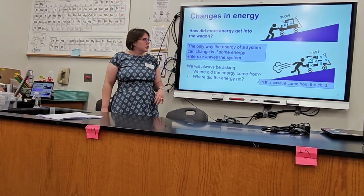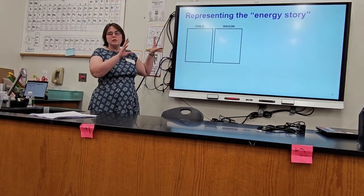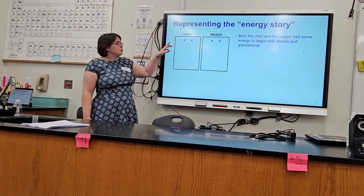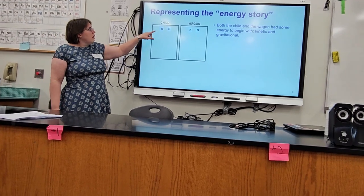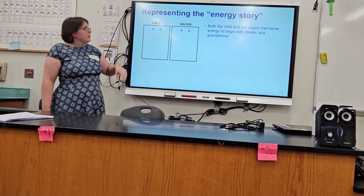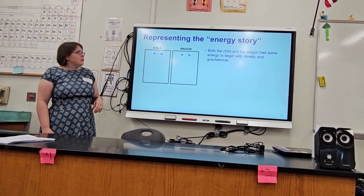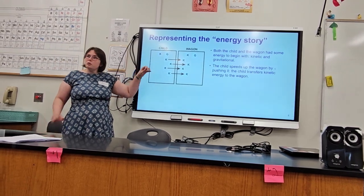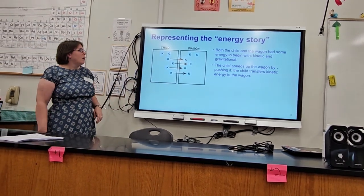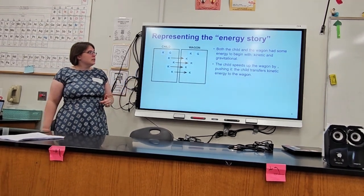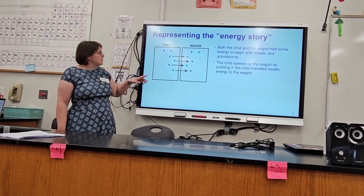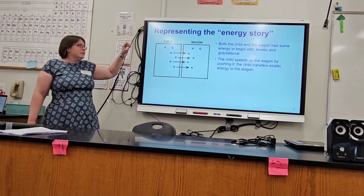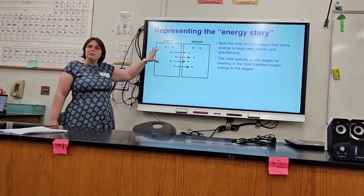So the only way the energy of the system can change is if more energy is added to the system or if it leaves it. And we'll always be asking where did the energy come from and where did it go? In this case, it came from the child and you can go back further than that and get them to the sun and whatever. But right now we're just focusing on the child. So we start with these two rectangles, the child and the wagon. And if you notice, these are the blocks still. So we have kinetic and gravitational of the child, kinetic and gravitational of the wagon. They start with the same energy to begin with. And then you see the arrows. Those arrows show the different types of transformations.